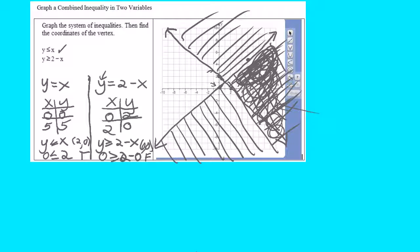Now we have to do one more thing. We have to find this point of intersection right here, the vertex. I have two lines I'm dealing with: the line y equals x and the line y equals 2 minus x. I can use substitution.